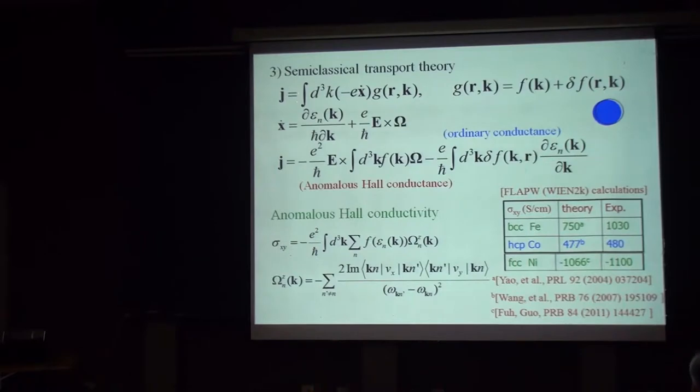Now, if you plug this into expression for electric current, you get two terms. This is ordinary conductivity you have, due to non-equilibrium distribution of carrier due to electric field. Now, in addition, you have this term, which you can get by integrating Berry curvature in momentum space, but this is perpendicular to applied electric field. And that's transverse current. And this term gives rise to anomalous Hall conductivity.